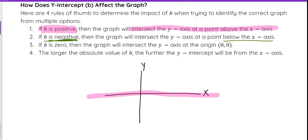Now, if the b value is 0, that's going to indicate that it crosses at the origin because that is the only place on the y-axis that has a value of 0.